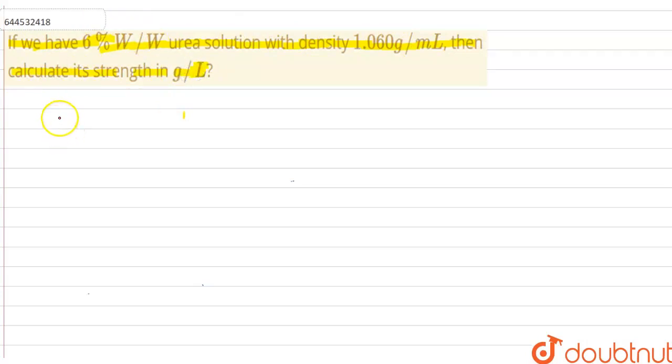So how to find, let's see carefully. First of all, we have to know that 6% W by W